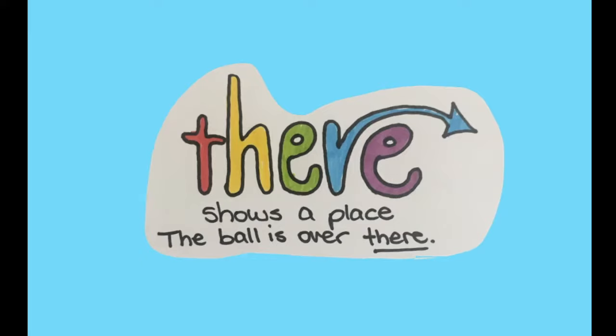Now let's look at T-H-E-R-E. There. This one shows our place. The ball is over there. The car is over there. The tree is over there. This 'there' is all about direction and place. I've made the R into an arrow to point in a direction, so it reminds you to look for a place, because this 'there' is all about direction and place.